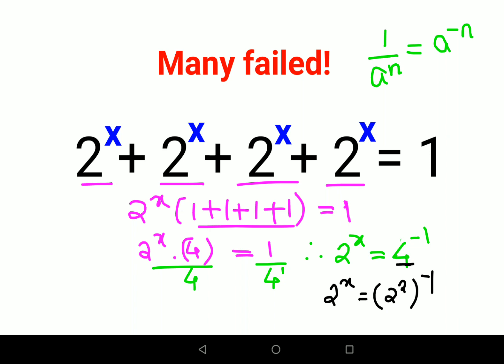If you remember, there is a rule in indices: a raised to m the whole raised to n is nothing but a raised to m into n. So here also I can say therefore 2 raised to x equals 2 raised to 2 into minus 1, which is minus 2. So my answer for the value of x is minus 2.